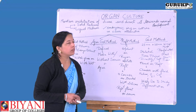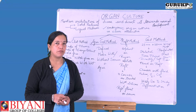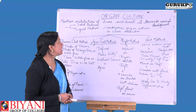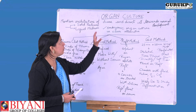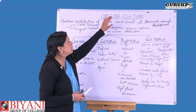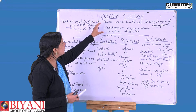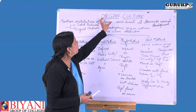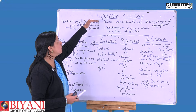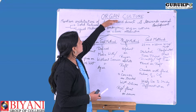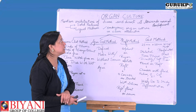First, what is an organ? We know that the cell is the basic structural and functional unit of life. Same type of cells aggregate together to form tissues, and different types of tissues aggregate together to form organs, so that the organ can perform a particular function. Using the cell culture technique, which is under the animal biotechnology topic, we can culture the organ in in vitro conditions — and that is what organ culture is.